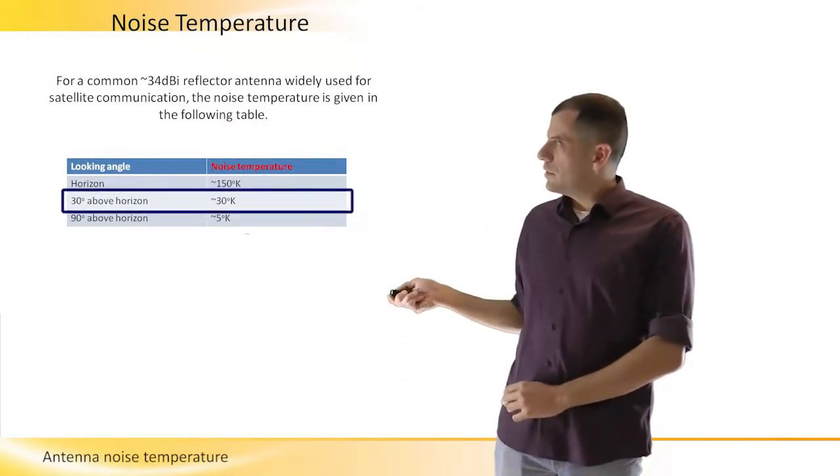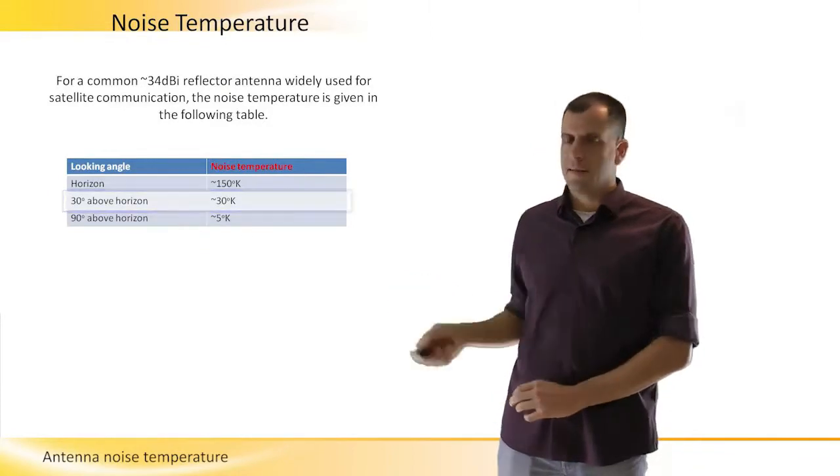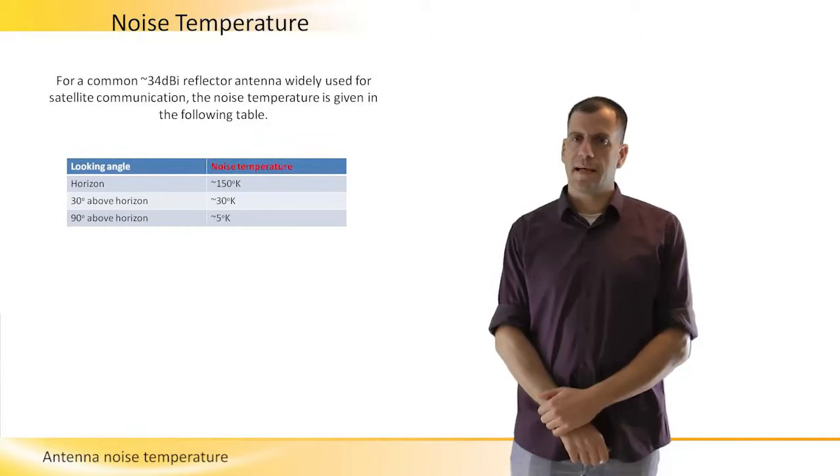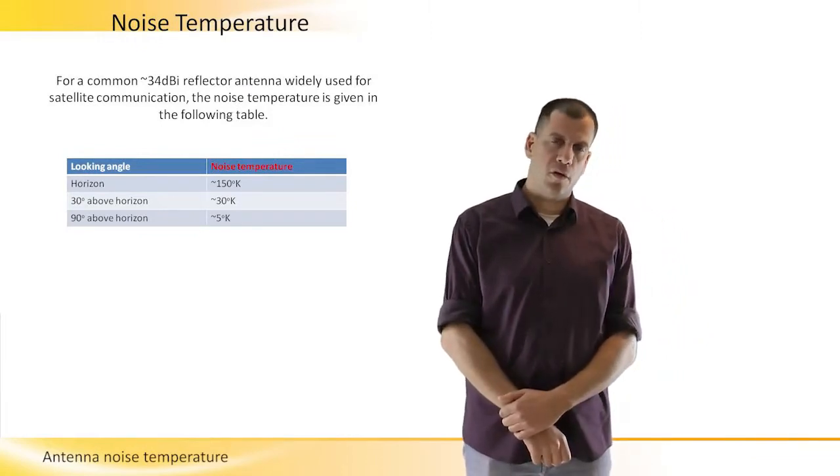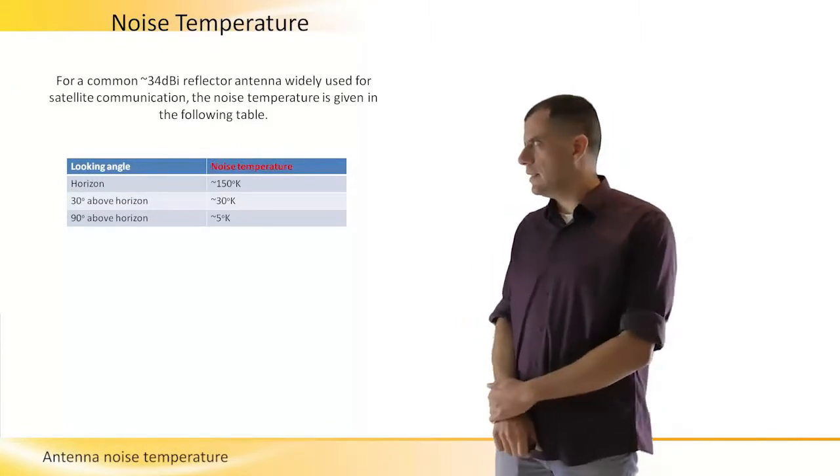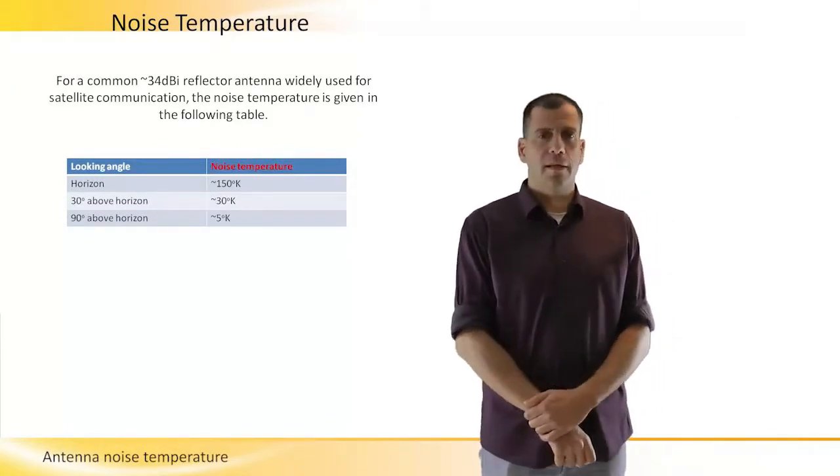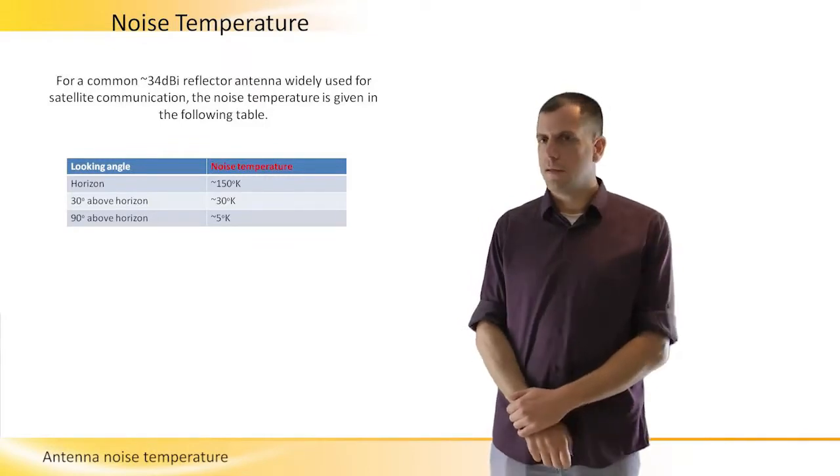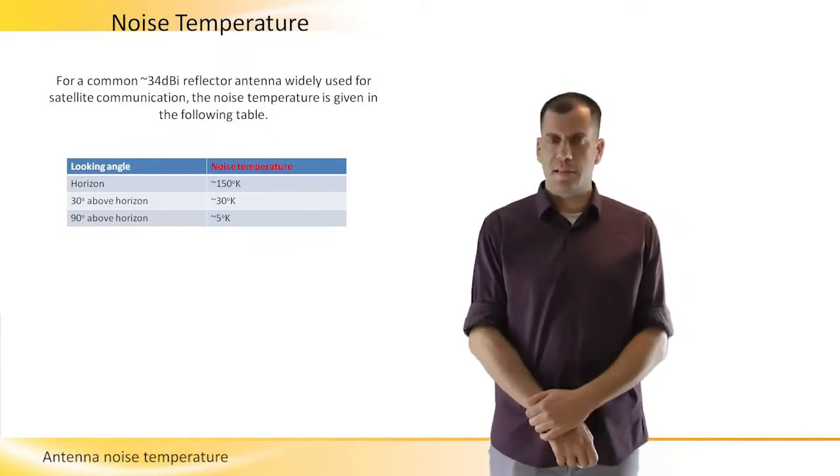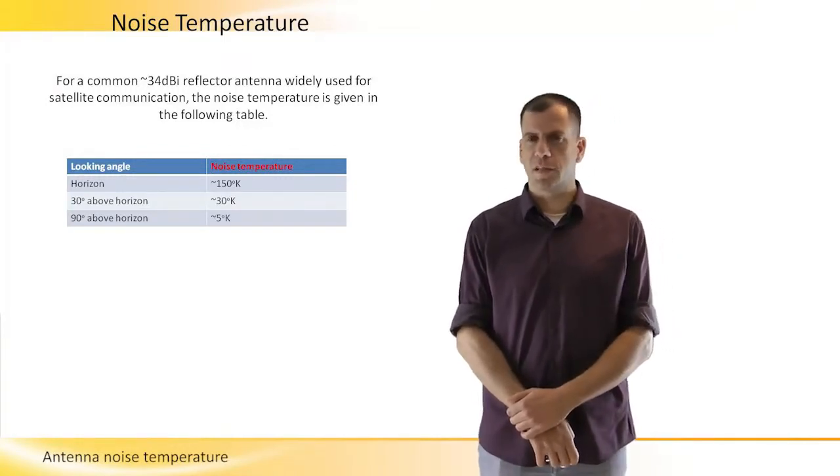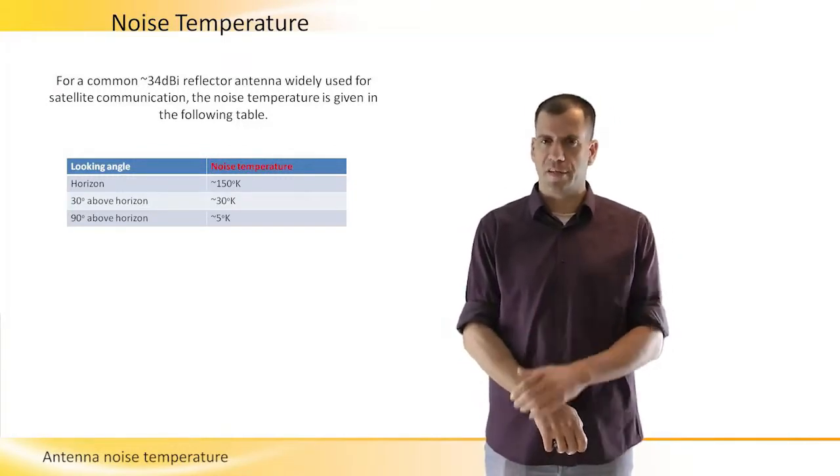If the antenna is 30 degrees above horizon, then most of the main beam sees the sky, while only a small part of the side lobes and back lobes see the ground, then the temperature of the antenna would be approximately 30 degrees Kelvin. This is most relevant for all the satellite TV communication antennas which are around these figures.